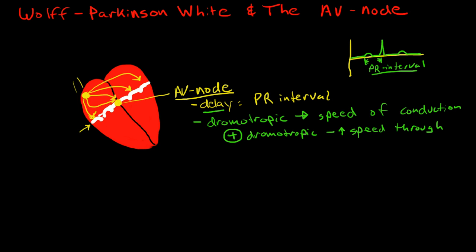And the major thing that would do this would be adrenergic activity. Particularly, the AV node has beta-1 receptors. So, epinephrine would do it and beta-1 agonists would do it.